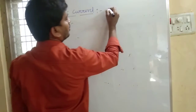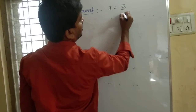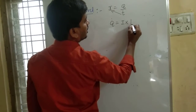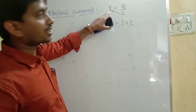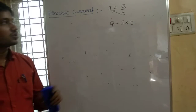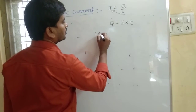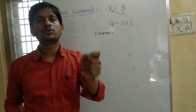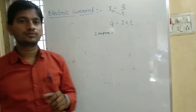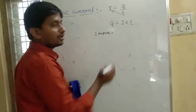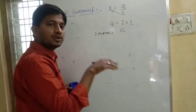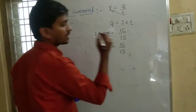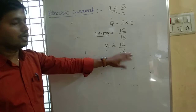We have the formula I equal to Q by T, which can be rearranged as Q equal to I into T. What do you mean by 1 Ampere? One Ampere is nothing but 1 Coulomb of charge passing through any cross section of a conductor in 1 second. So, 1 Ampere equals 1 Coulomb per second.